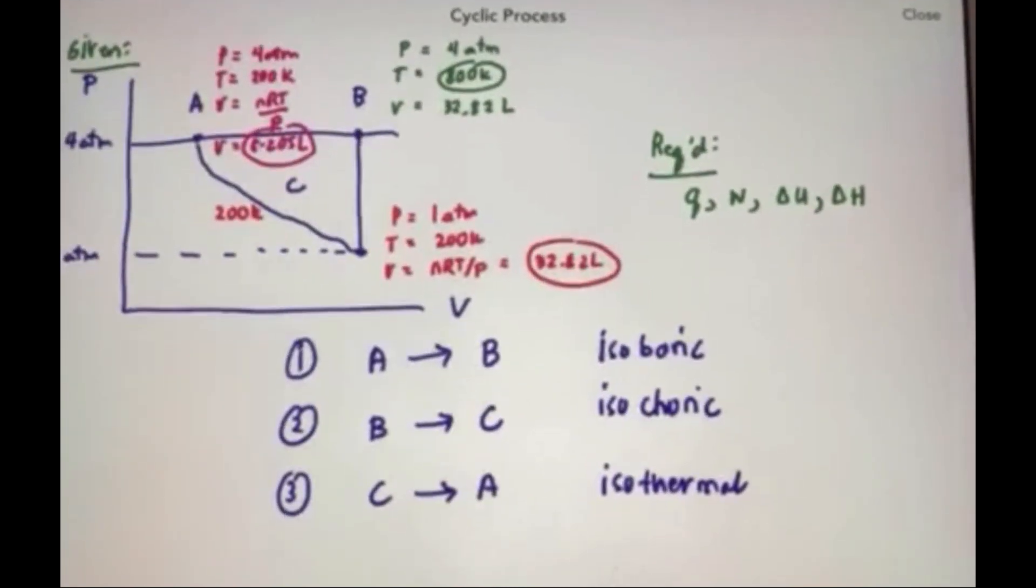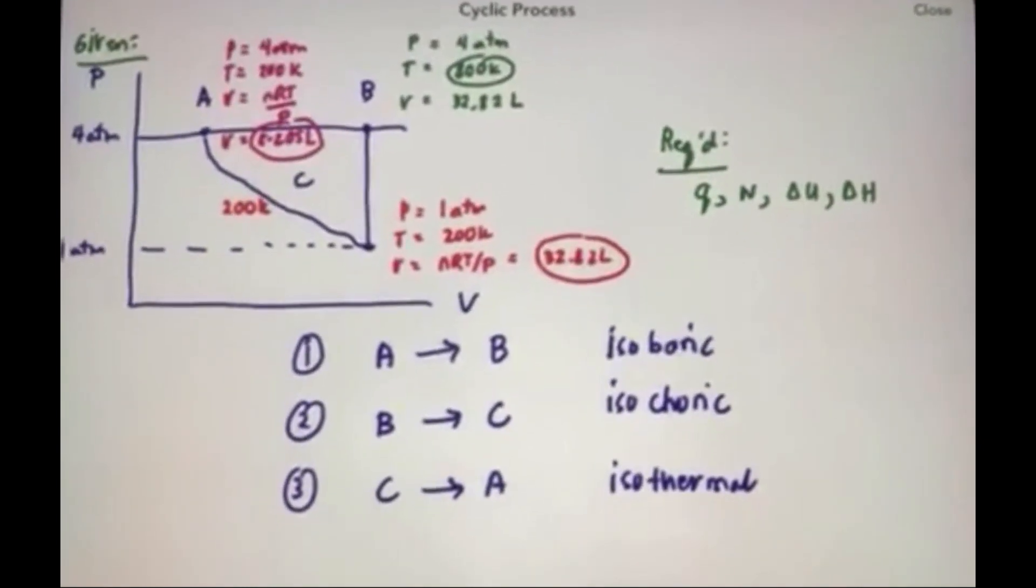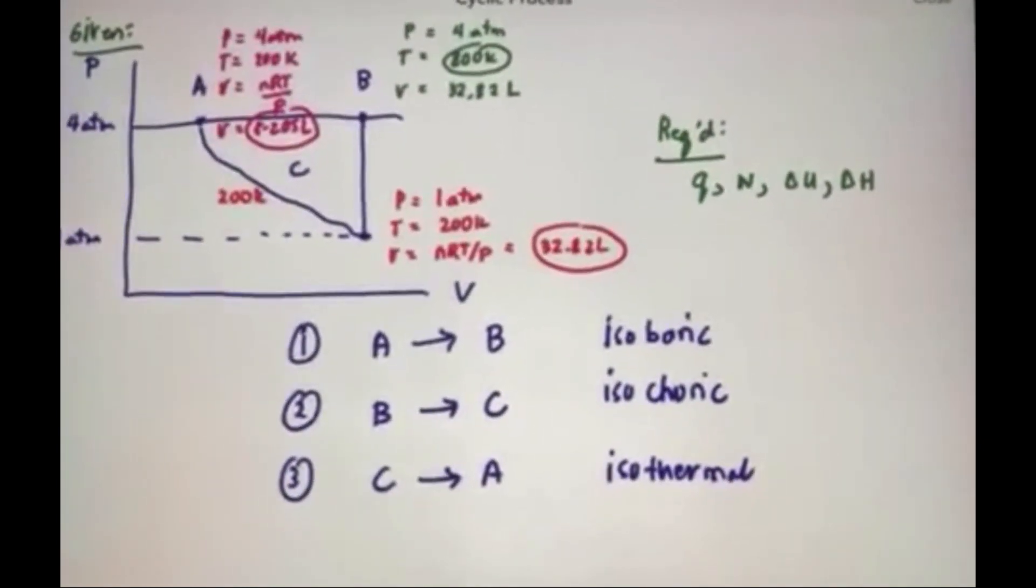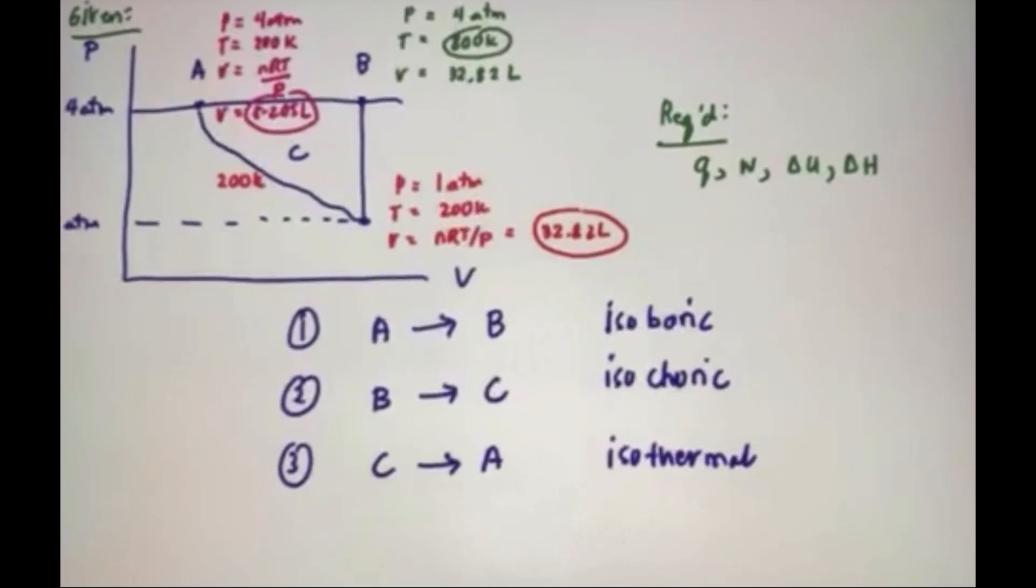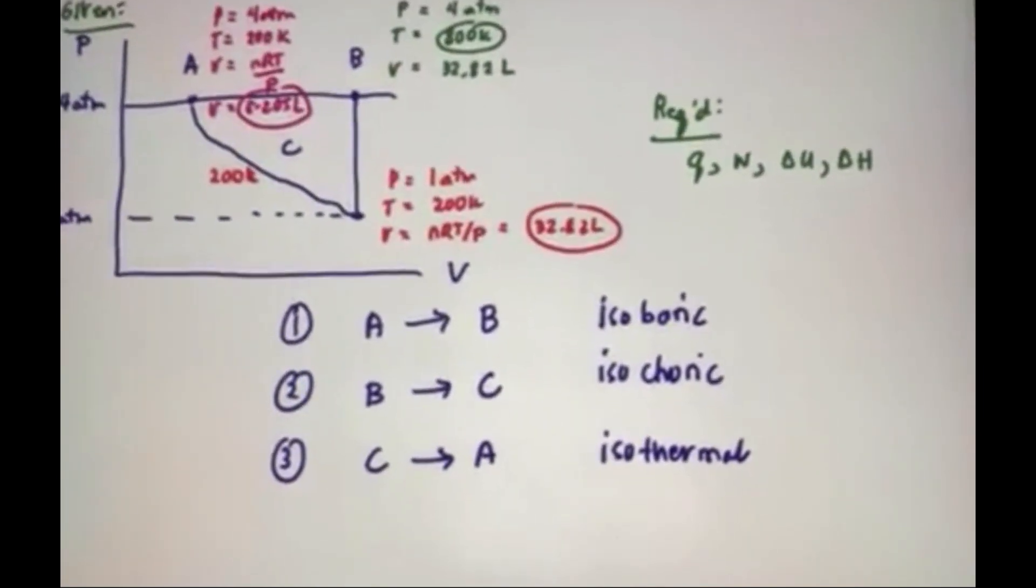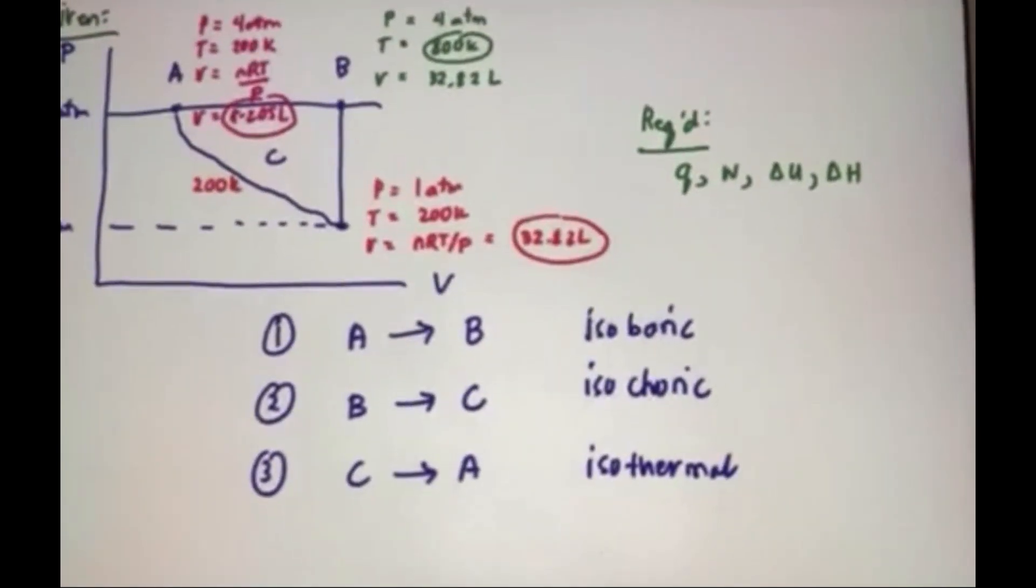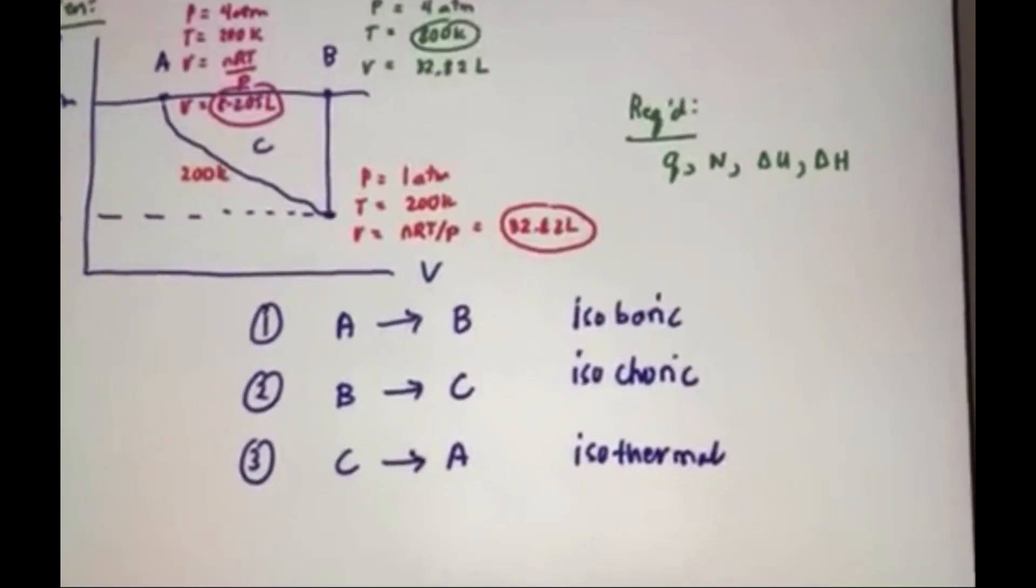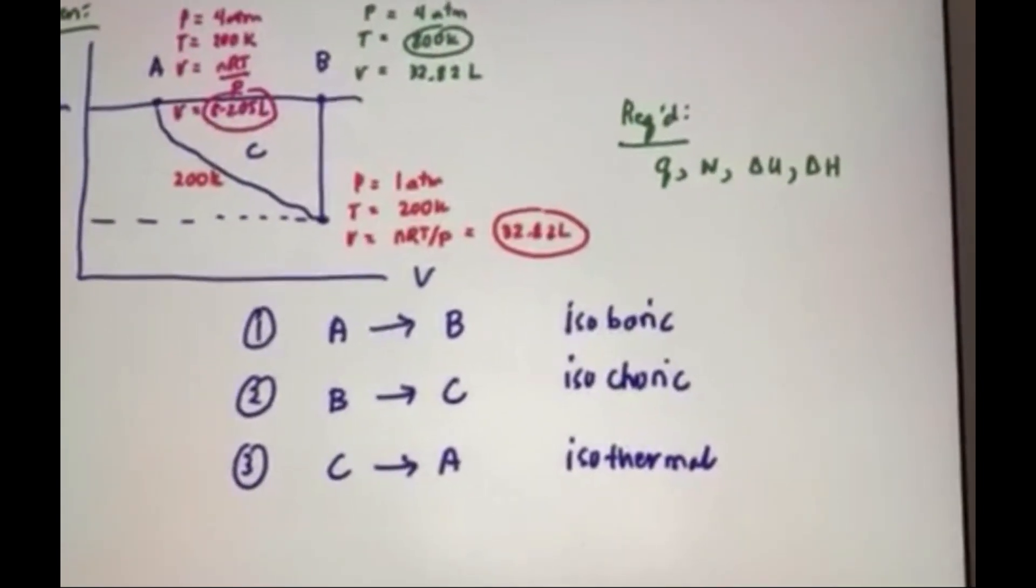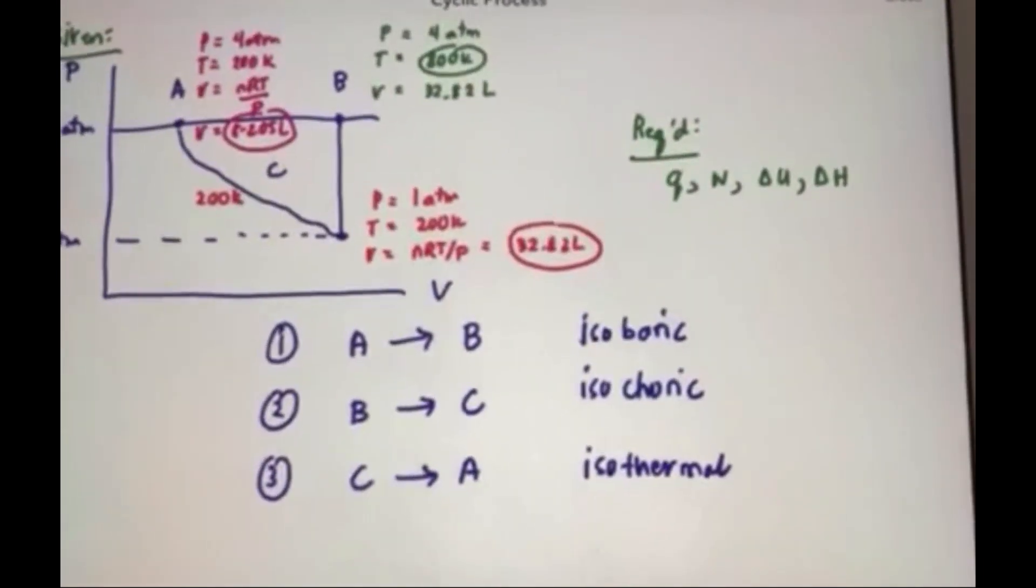Keep in mind that for step a to b, this is an isobaric process. So based on the PV isotherm pressure is equal to four atmosphere. We know that the temperature is 200 kelvin from the isotherm c to a. So using ideal gas law, volume equals 2 moles times ideal gas constant times the given T over pressure, volume is equal to 8.205 liters.